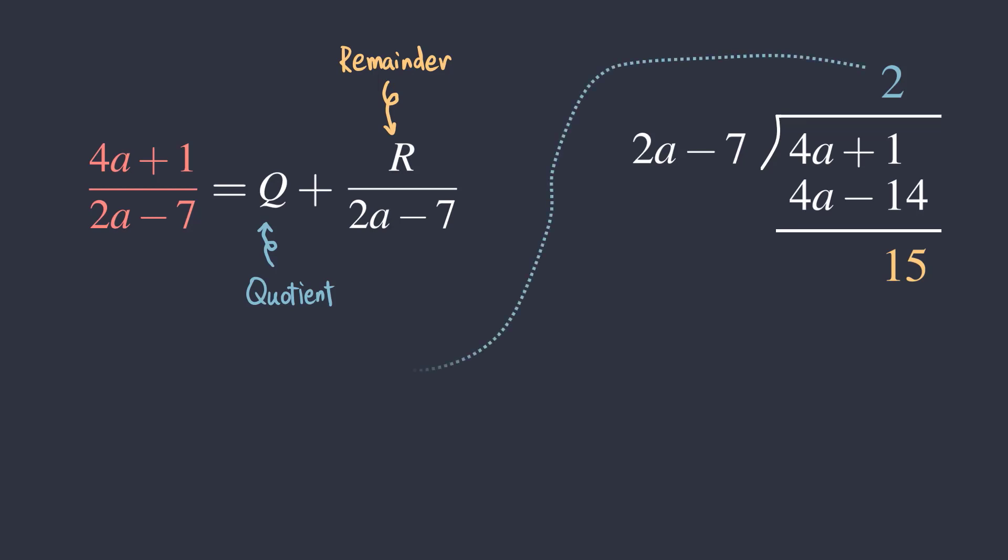Thus, q is 2 and r is 15. So now, 4a plus 1 over 2a minus 7 is equal to 2 plus the fraction with numerator 15 and denominator 2a minus 7.